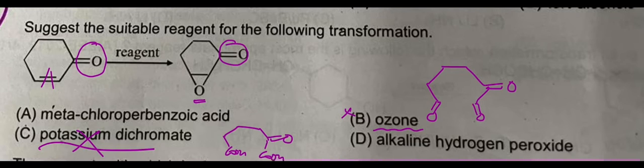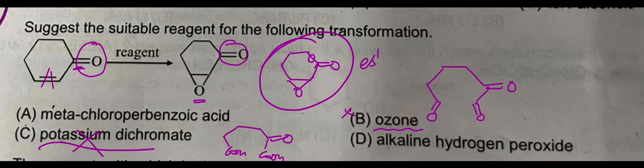Then meta-chloroperbenzoic acid—this is good for the double bond, but the problem is with the ketone part. When a ketone is present, one oxygen will come in between and it turns into an ester.